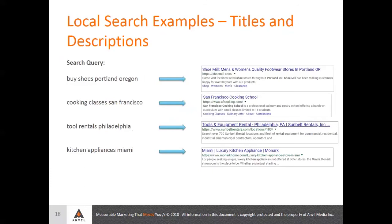These are four random queries I pulled: 'Shoes Portland Oregon' — you can see Portland Oregon appears in both the title and meta description. 'Cooking Classes San Francisco' — again San Francisco in the page title and meta description. 'Tool Rentals Philadelphia' — appears in the title. 'Kitchen Appliances Miami' — Miami appears in both the page title and meta description. And with regard to these four search queries, these were all the number one ranked listings on the SERPs. So there does appear to be a relationship between having the local modifier in both the page title and the meta description.